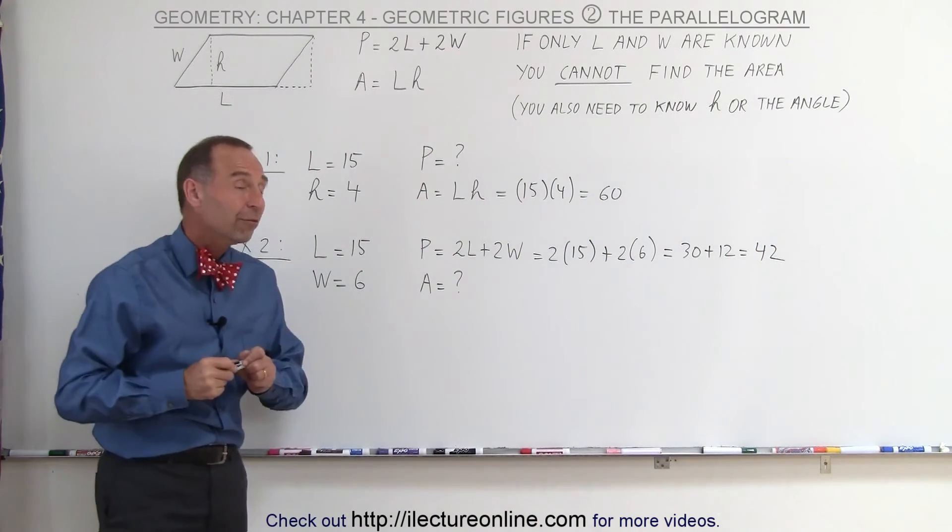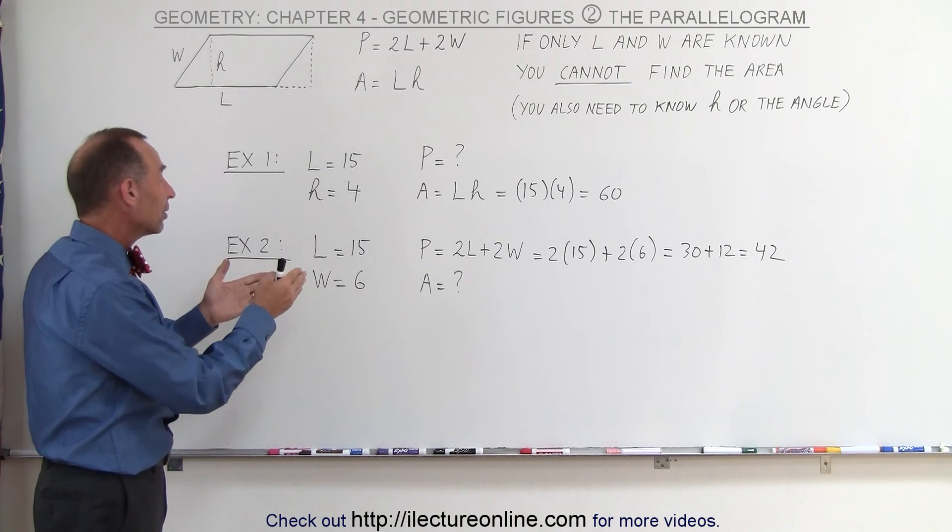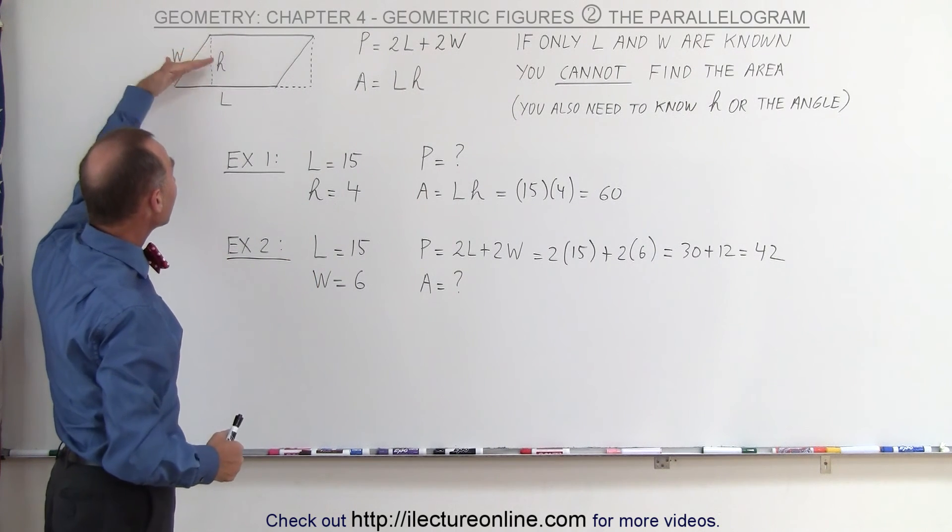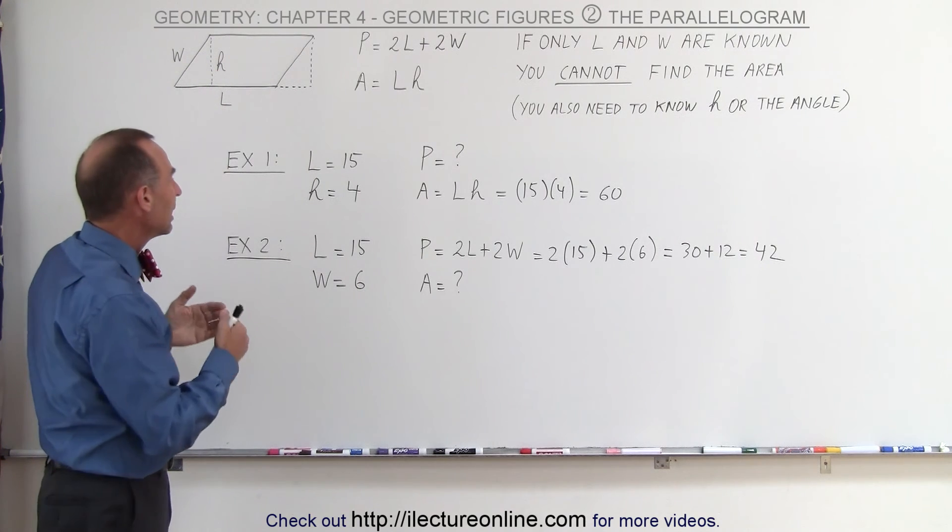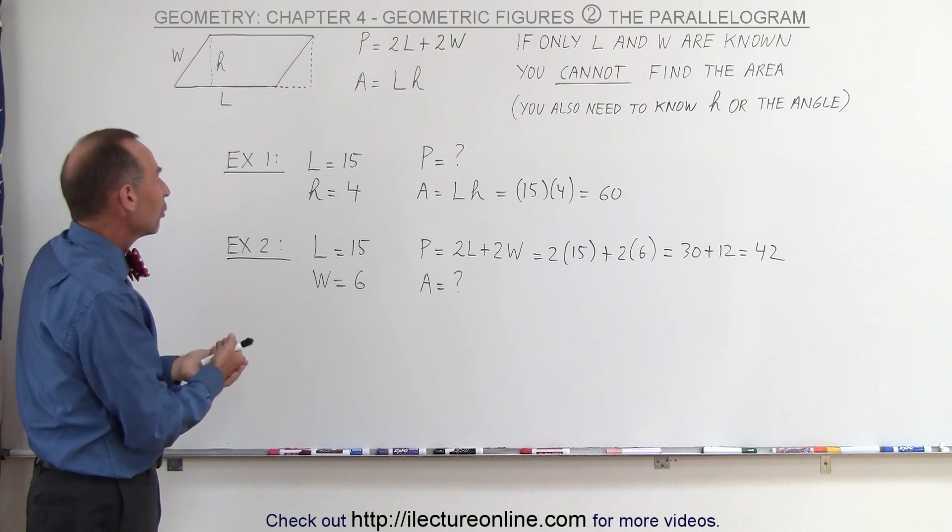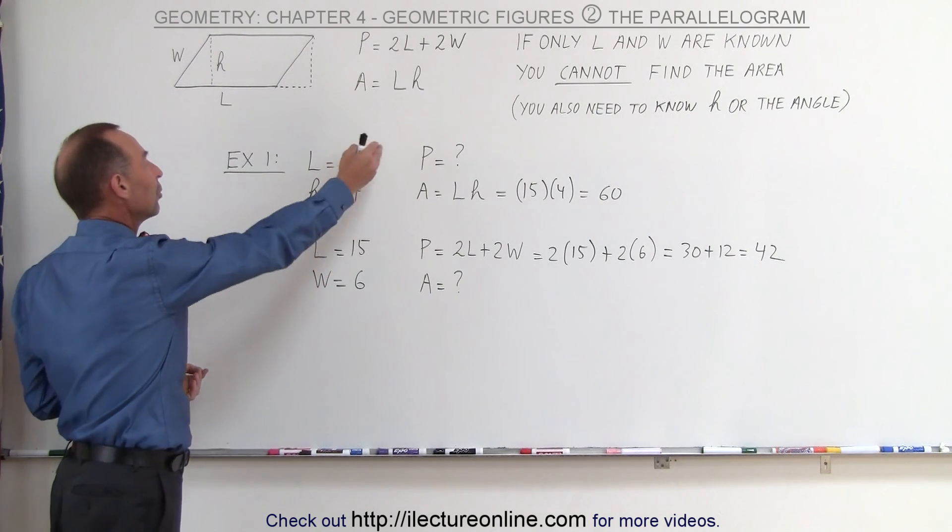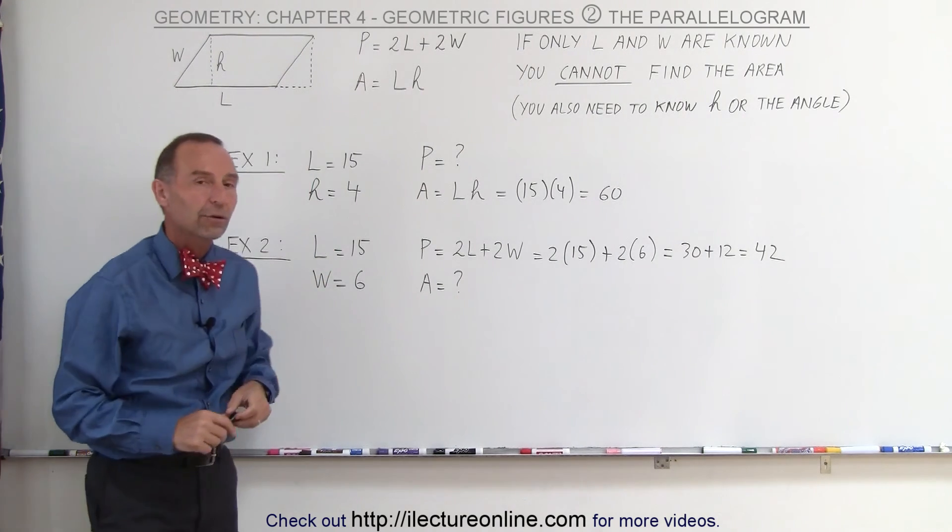However, as we said before, if they're asking for the area, since they only gave you the length and the width and you don't know what the angle is, you're not going to know the height, and therefore you're not going to know the area. The area in this case will remain unknown, like the perimeter must remain unknown in our first example.